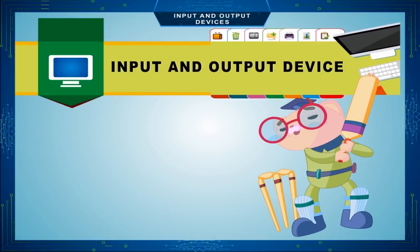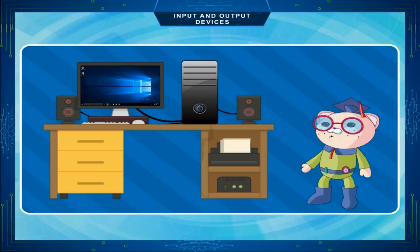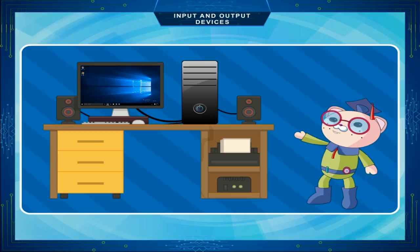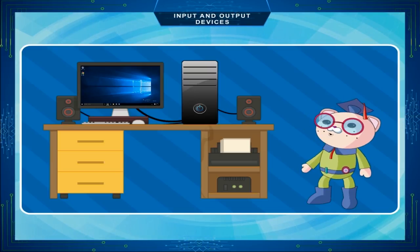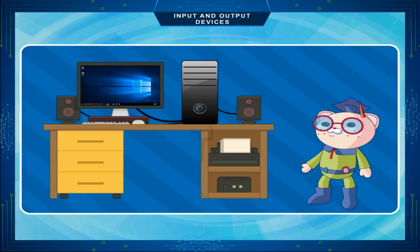Chapter 3: Input and Output Devices. In this chapter, we will learn about input and output devices of a computer. Input devices are the hardware components that are used to enter text or data and give instructions to the computer. Some of the input devices are described below.